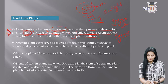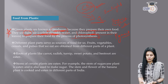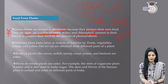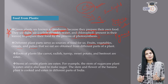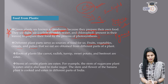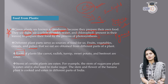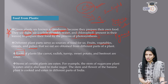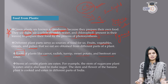Different plant parts serve as a source of food for us — this is also asked in exams. We eat plants in the form of fruits, vegetables, cereals, and pulses. First, roots of plants are edible. Common examples: carrots, radish, turnip, sweet potato, and beetroot — these are all roots. In Hindi: gajar, mooli, shalgam, sweet potato (shakarkandi), and beetroot.